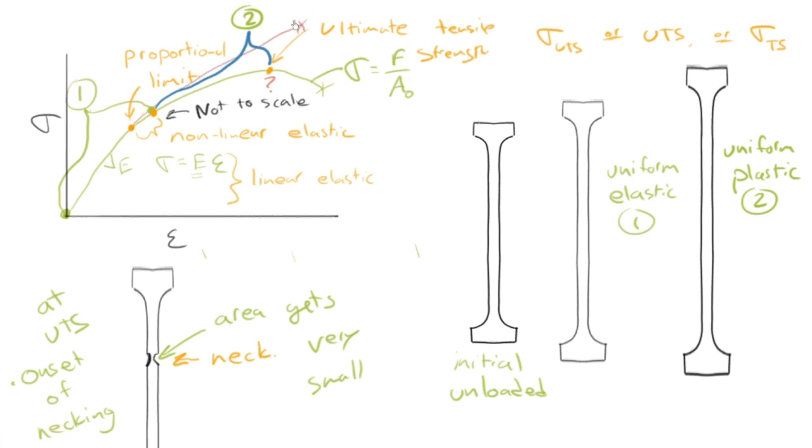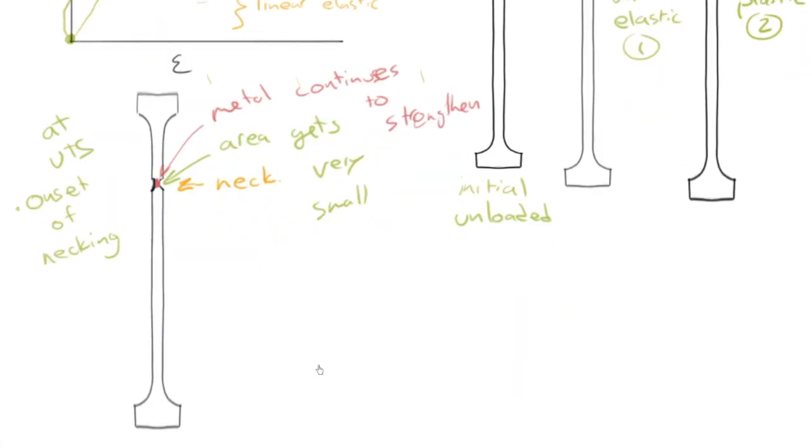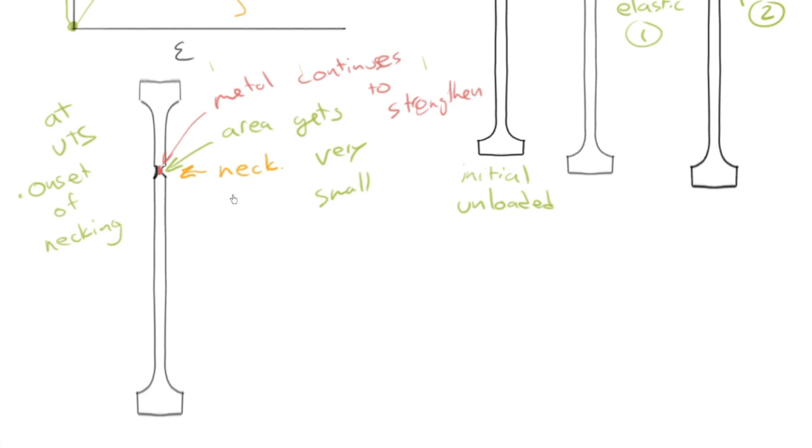If I were to plot for you the so-called true stress, that is, the stress that the material is actually experiencing, it would look something like this. We're not going to explore that in this course. But it's interesting to note that the metal actually continues to get stronger, or to strengthen, even though we see this engineering stress decrease. That's only because the cross-sectional area has gotten so small there. This type of deformation here, the necking, is referred to as localized plastic deformation.